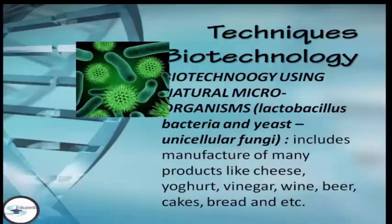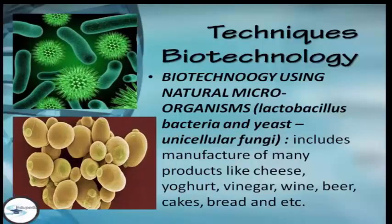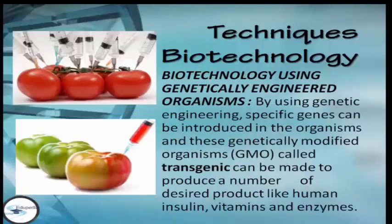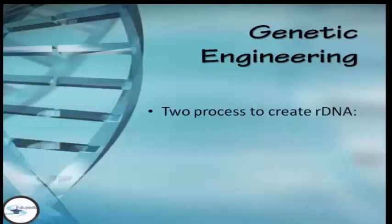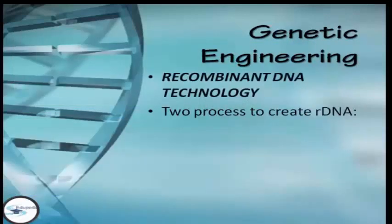The next technique involves using genetically engineered organisms. By using genetic engineering, specific genes can be introduced into organisms, and these genetically modified organisms — or GMOs — called transgenics can be made to produce desired products like human insulin, vitamins, and enzymes. Genetic engineering is also called recombinant DNA technology.